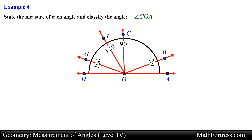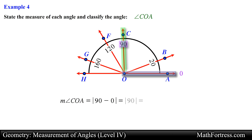Angle COA. Let's figure out where the rays of the angle are located on the protractor. Ray OC is located at the 90 degree mark and ray OA is located at the 0 degree mark since it is aligned with the straight edge of the protractor. Calculating the absolute difference of these angles, we obtain 90 degrees, so this angle can be classified as a right angle.